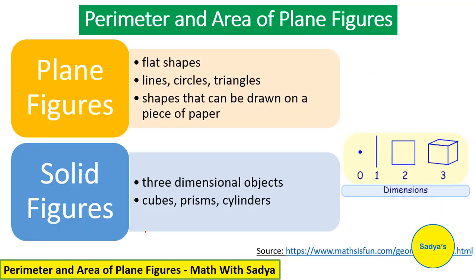Now as the title suggests, we are talking about perimeter and area of plane figures. So let's see what are plane figures. Plane figures are flat surfaces, like lines, circle, triangle, square, rectangle. So any shape that can be drawn on a piece of paper, that is a plane figure.